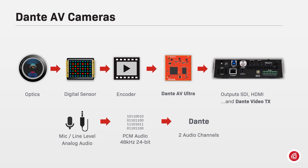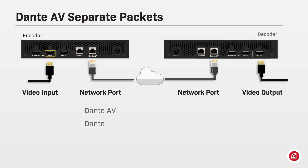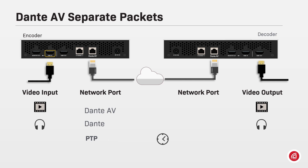For Dante AV Ultra cameras that must consider more steps in the digitalization of video, this fader will show different values. The devices will send different packets for video, audio, and clocking. With timestamps on each packet, the internal clock of each device can time-align audio and video delivery to the playout.